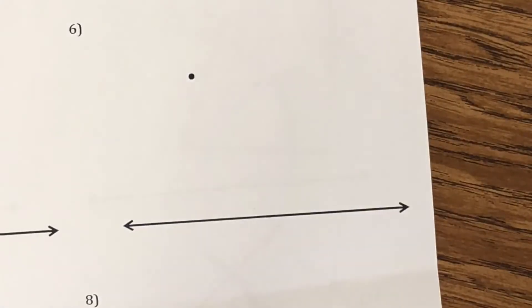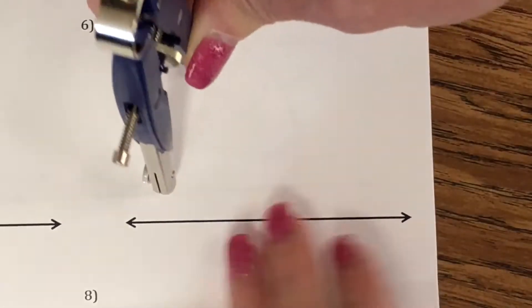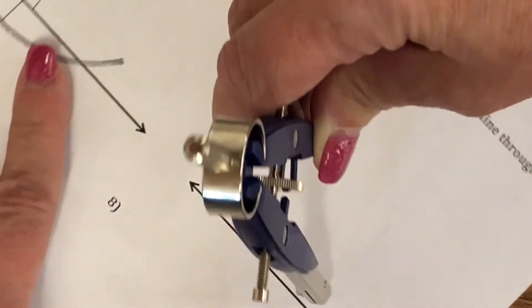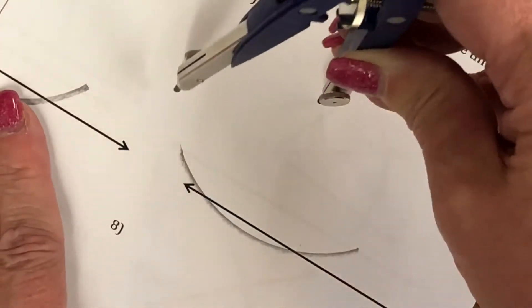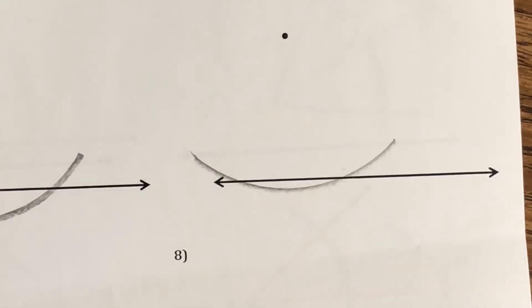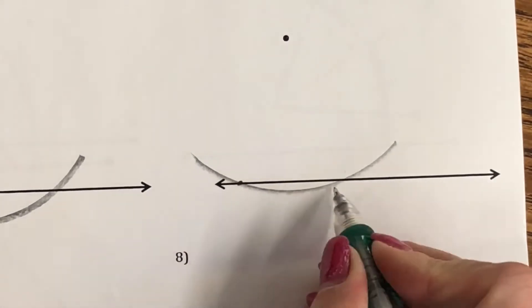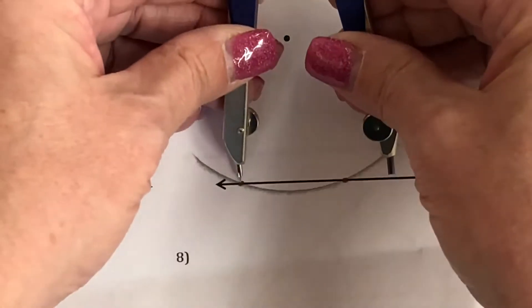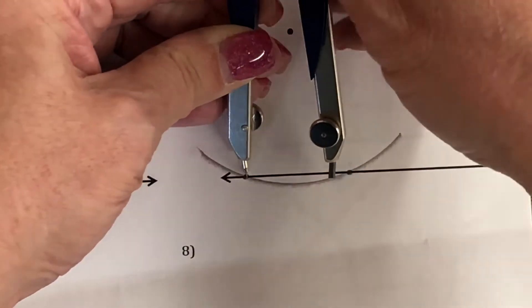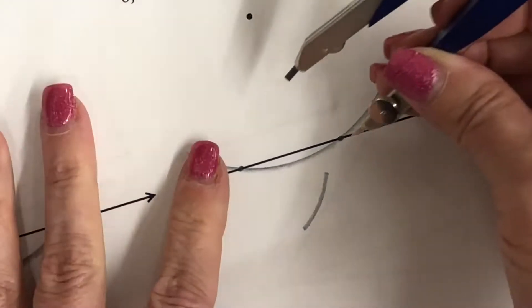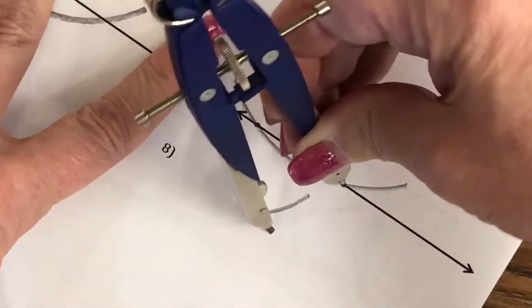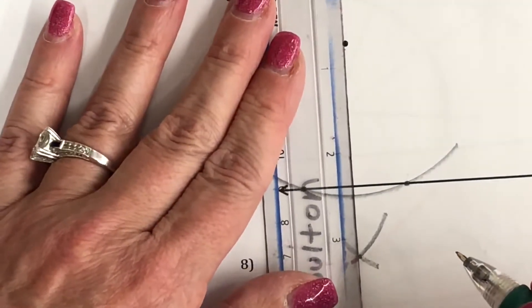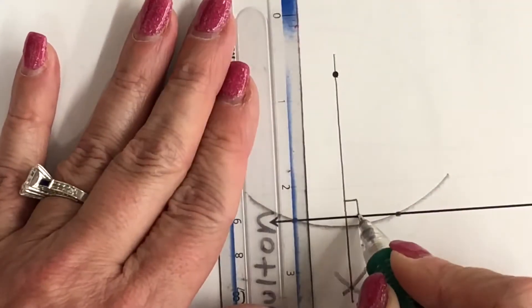Number six: put the compass point on the given point and make this big enough so it will cross the line. This is kind of a small arc. You want to be really exact to see right where it's crossing — it's about right there and right there. Make those two points. Now go a little more than half and make an arc below on both sides. Connect this point to the point that was given to us, and put your symbol to show that they are perpendicular.